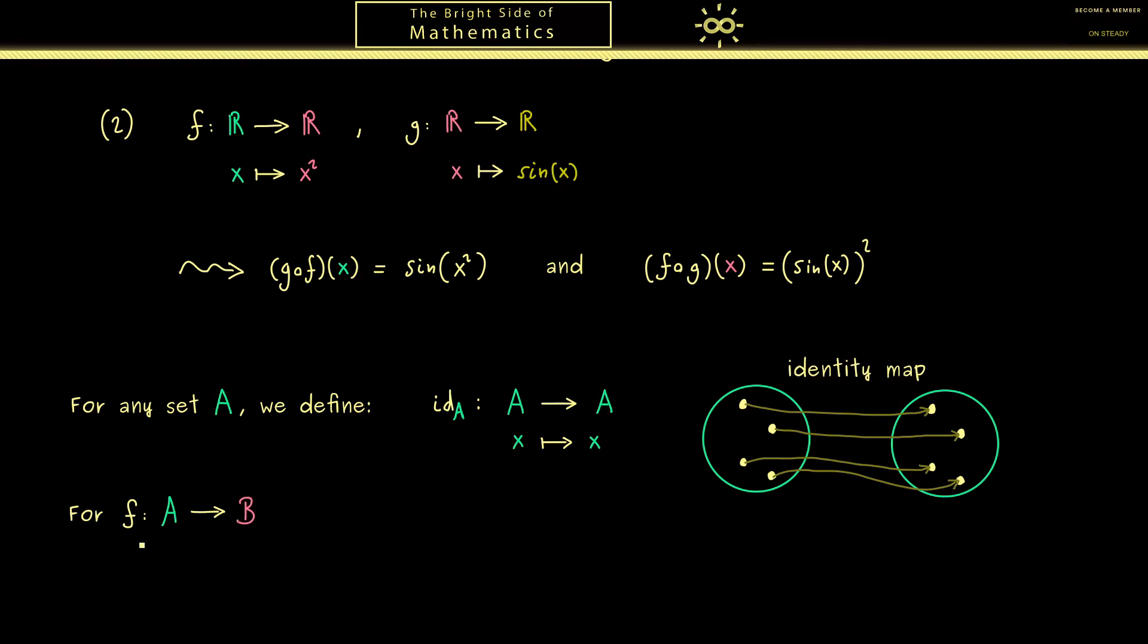Now if you consider any other function from A into another set B, the composition identity map after f wouldn't change anything. You would get out f again.